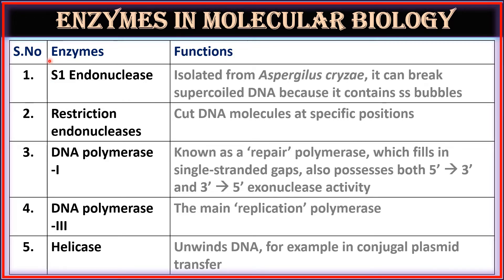First, S1 endonuclease: it is isolated from Aspergillus griseus and can break supercoiled DNA because it contains single-stranded bubbles. Second, restriction endonucleases: these cut DNA molecules at specific positions.